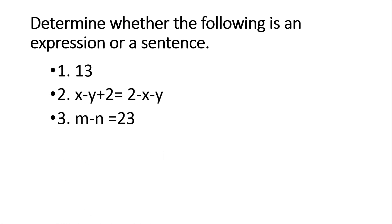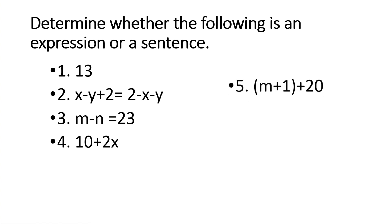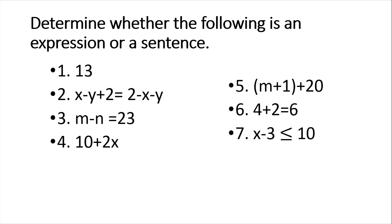Now determine whether the following is an expression or a sentence. Number 1: 13 — it has no meaning, so it is an expression. Number 2: an equation form — it has a meaning, so it is a sentence. Number 3 is also a sentence — the difference of M and N is equal to 23. Number 4: 10 plus 2x — no complete thought, so it is an expression. Number 5 is also an expression. Number 6: 4 plus 2 is 6 — it is a complete sentence. Number 7: x minus 3 is less than or equal to 10 — the difference of x and 3 is less than or equal to 10 — so it is a sentence.